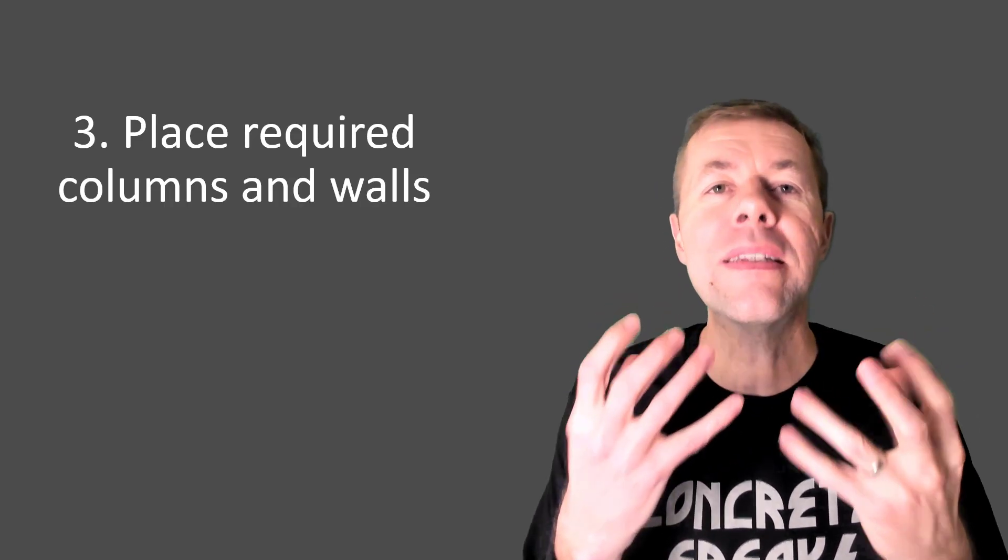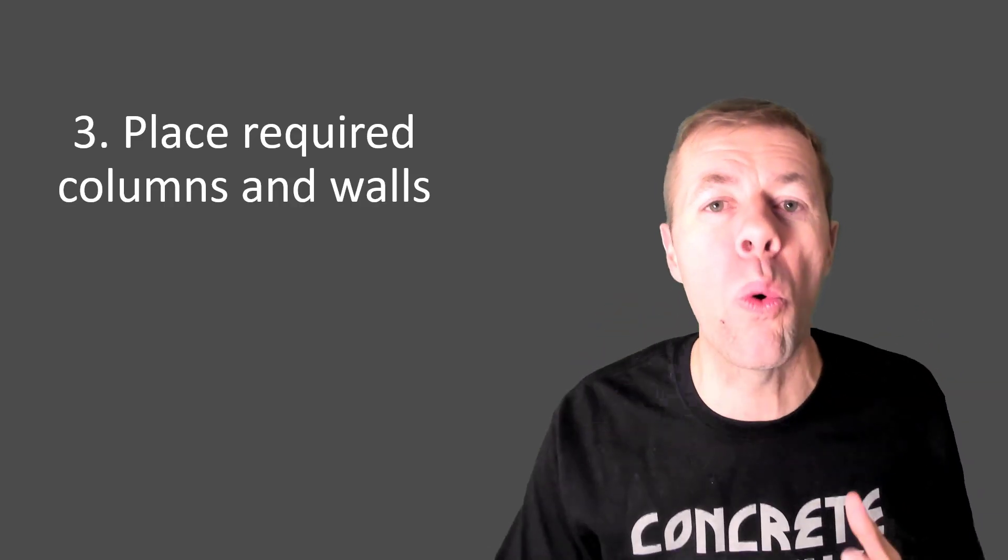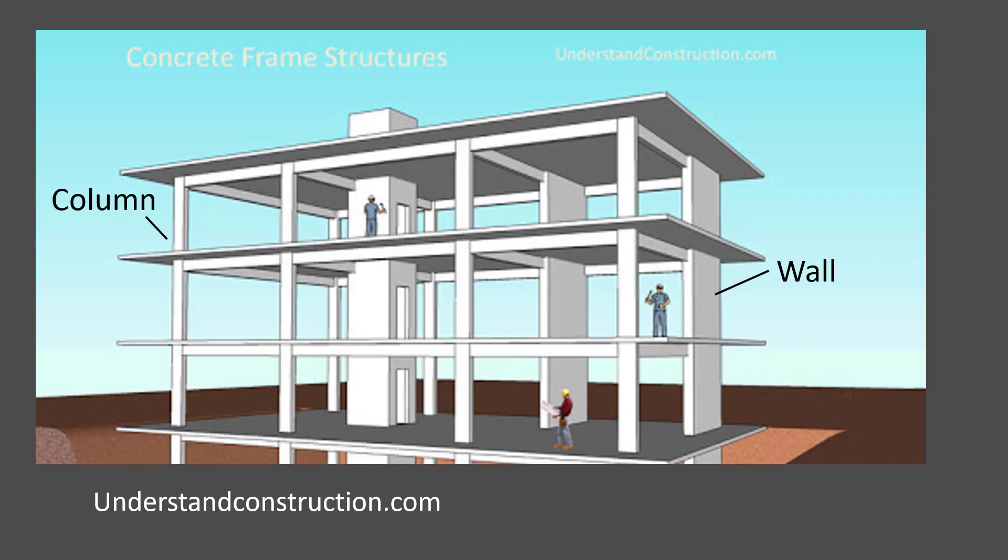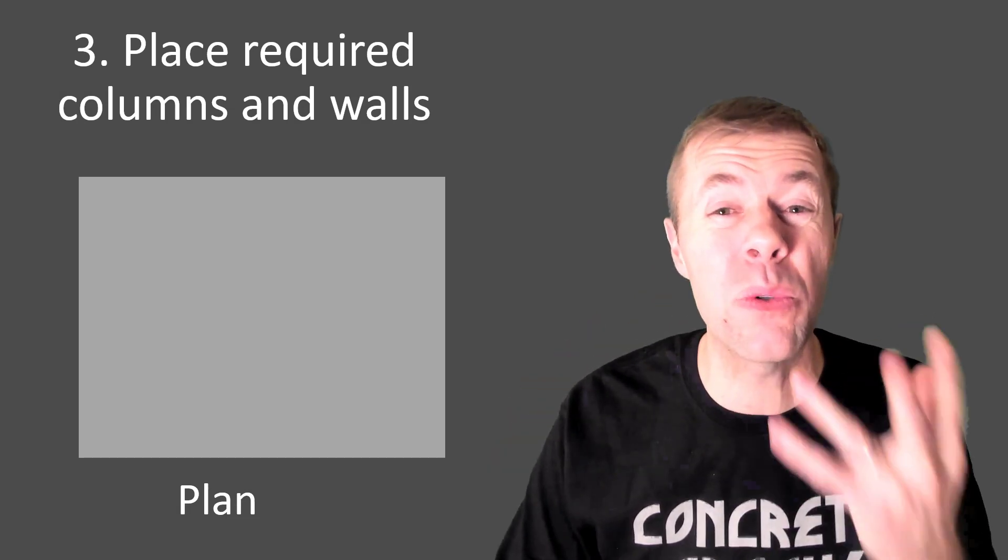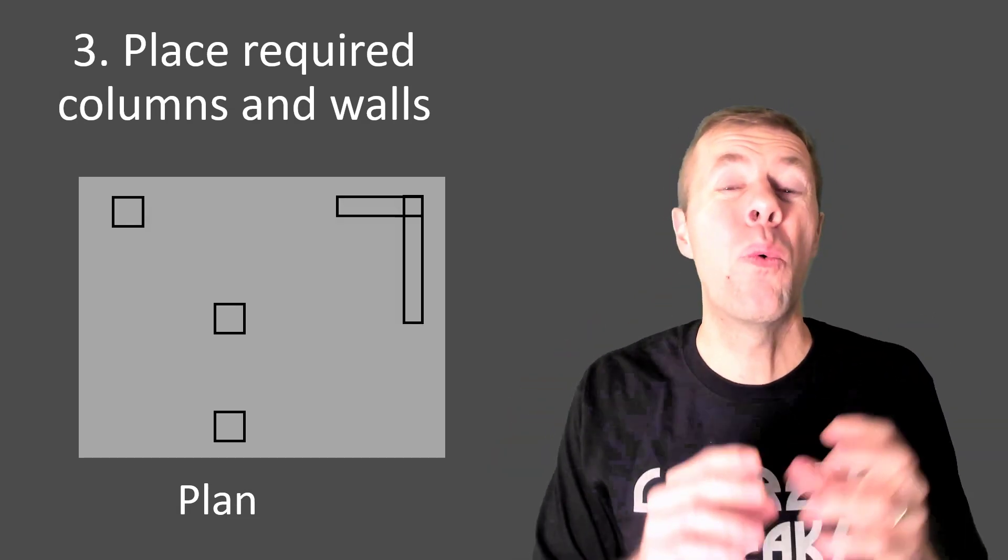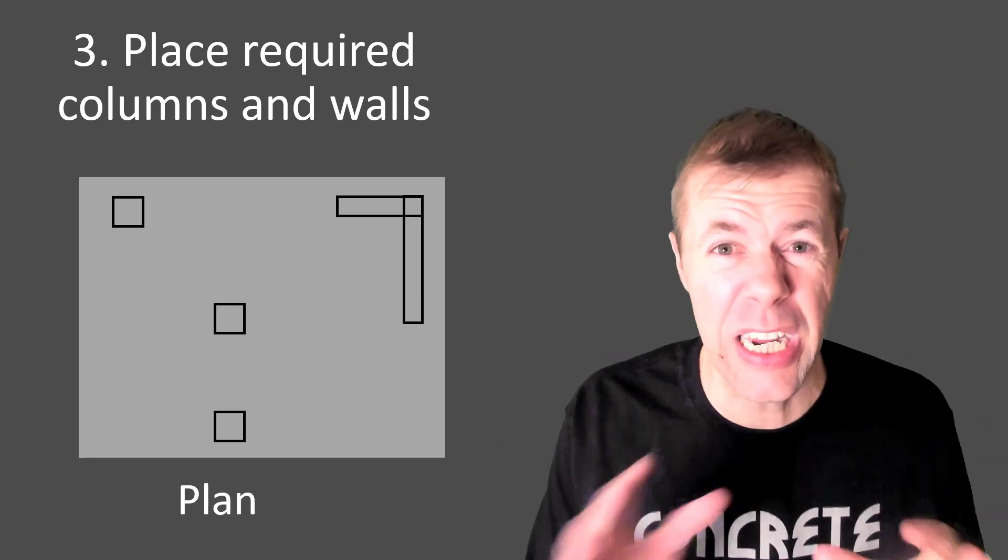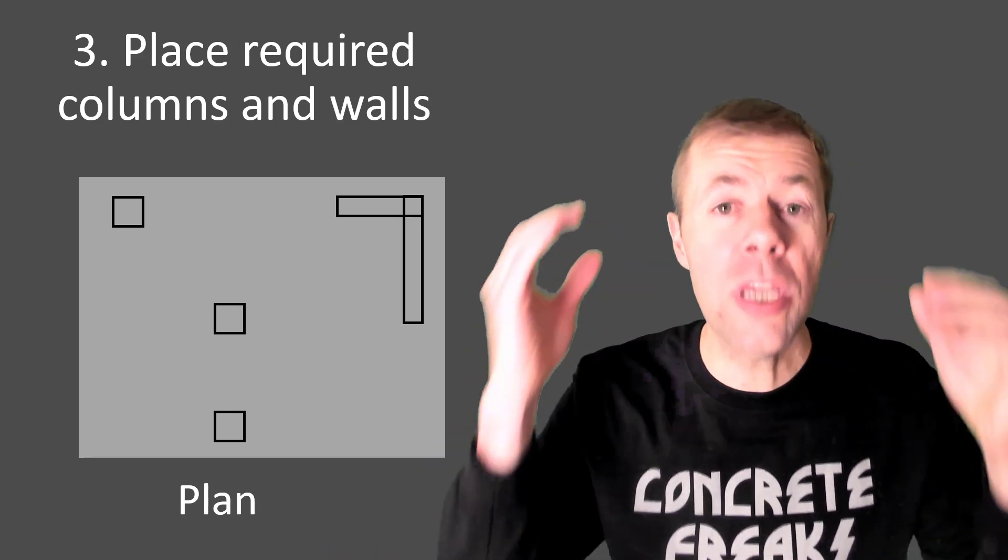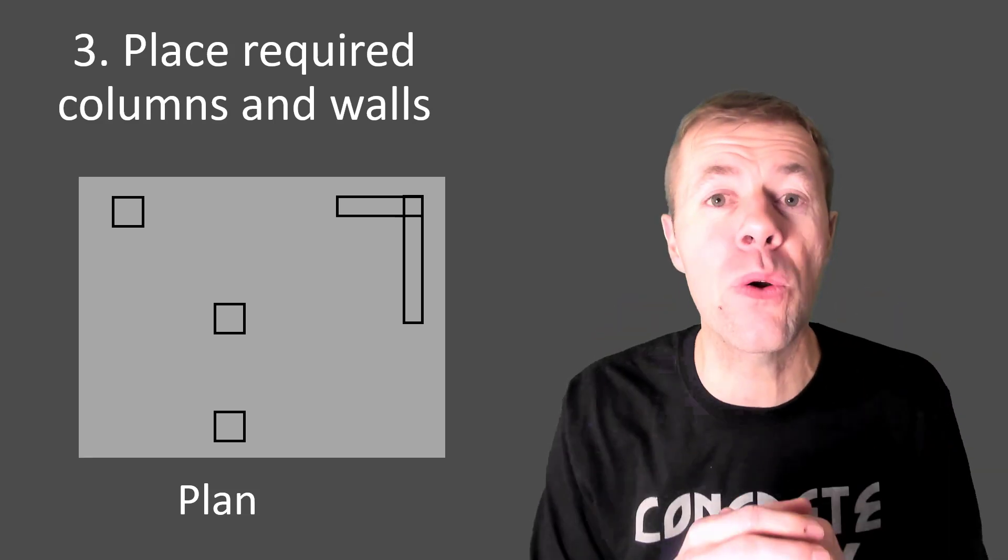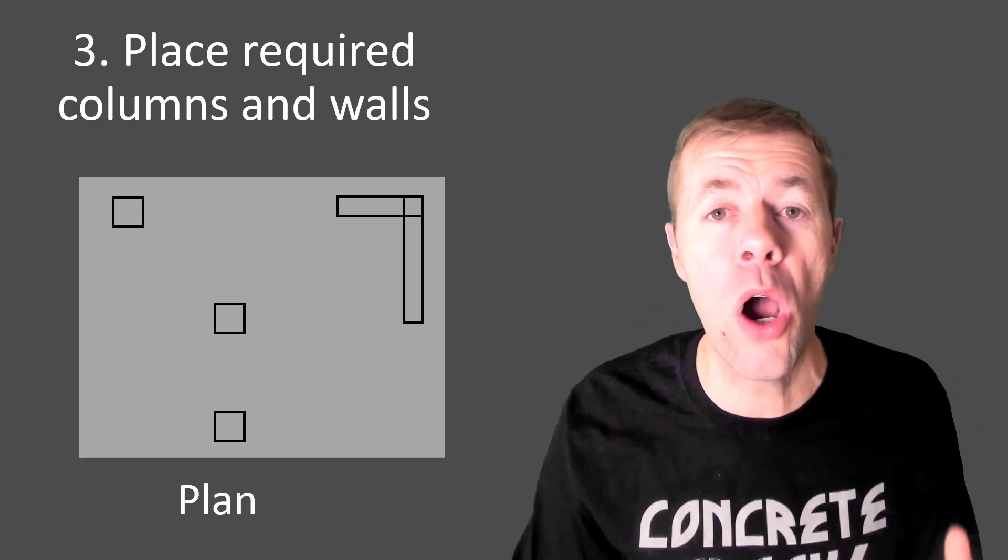Next we want to place any required columns and walls we might have. Any place they must absolutely positively be. We've got to put them there. So let's figure that out. Sometimes your architect friends will tell you. Yep we need these about here. That's helpful. That reduces some of the guesswork that you have to figure out where these columns and walls are gonna have to go.